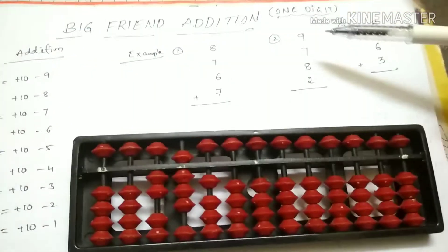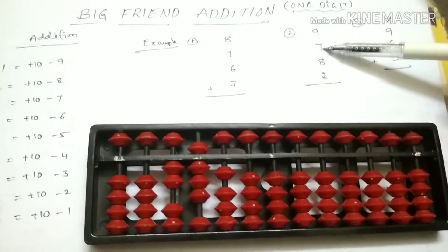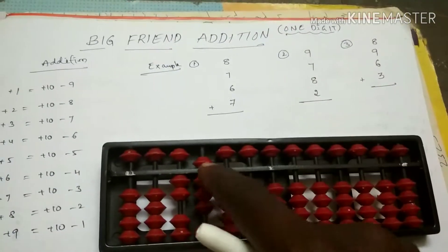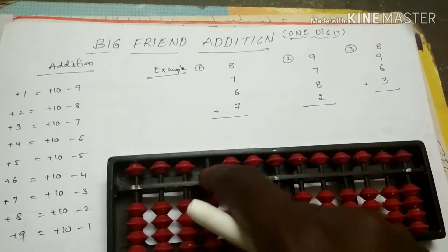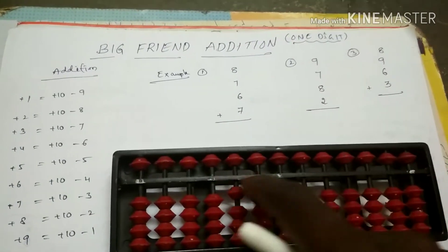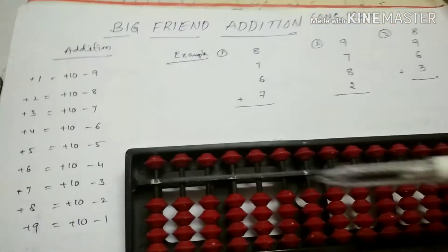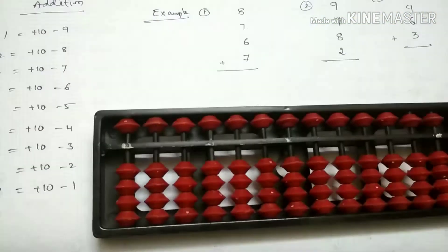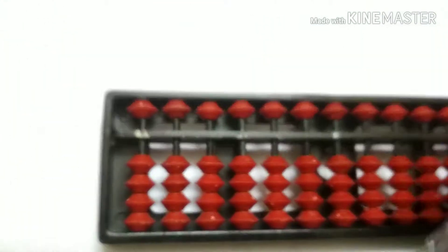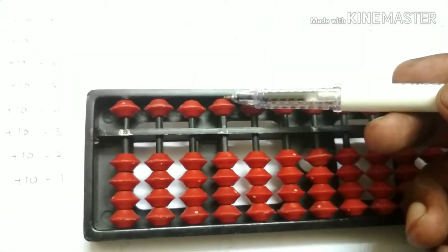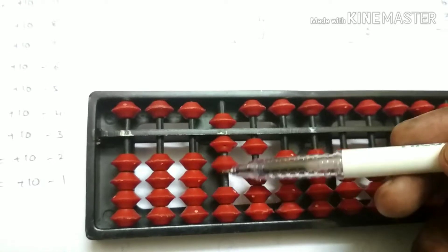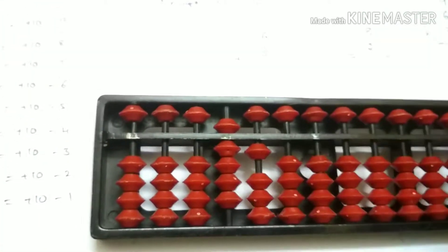So, one more example. 9 plus 7 plus 8 plus 2. First, we are taking the initial position. Then we add 9. Add 9 means once digit: 5, 6, 7, 8, 9. So add 9.